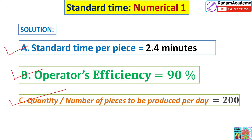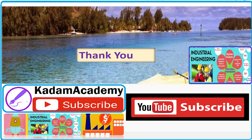To summarize: standard time per piece is 2.4 minutes, quantity to be produced per day is 200 pieces, and operator efficiency is 90 percent. Writing these three answers correctly will get you 8 marks. Thank you for watching. If you haven't subscribed, please subscribe for more videos.